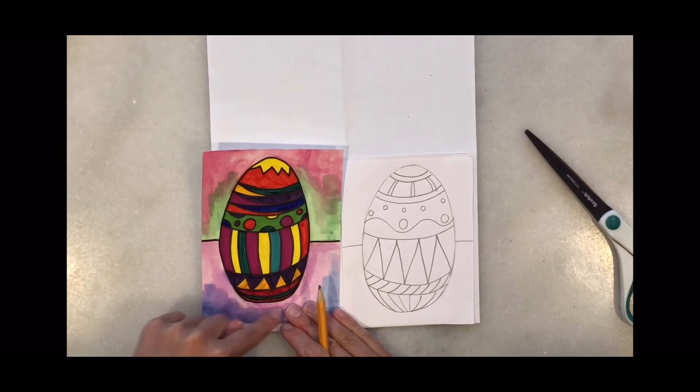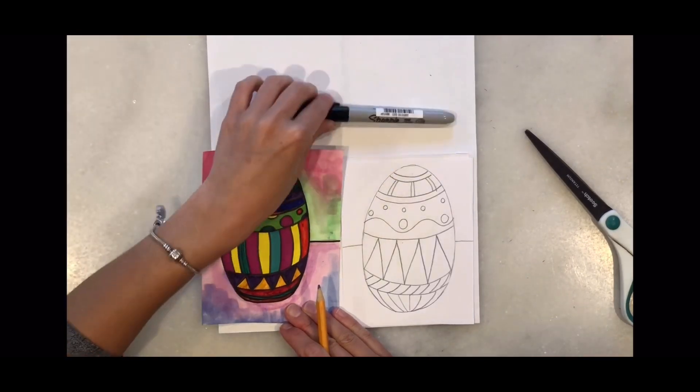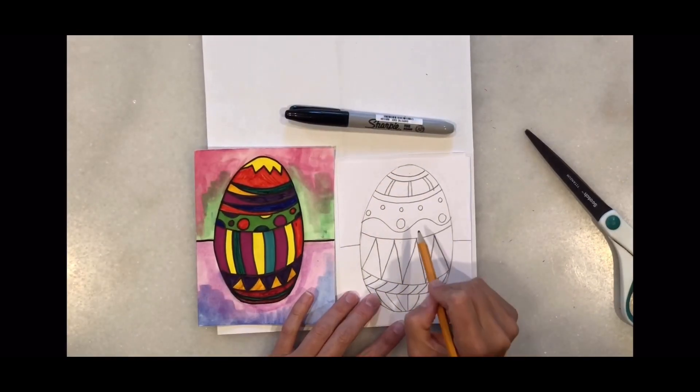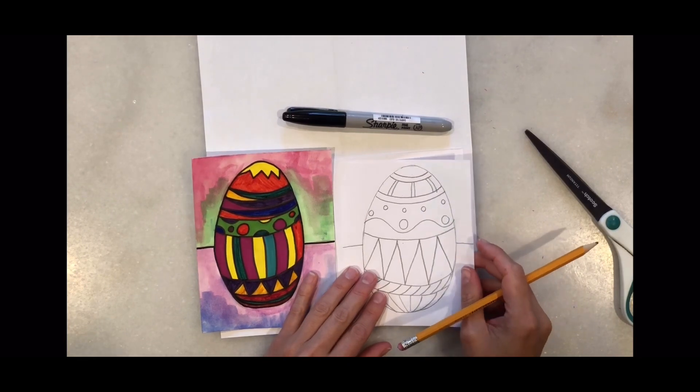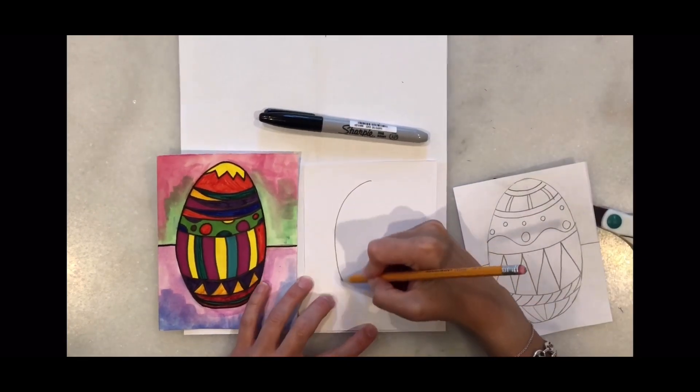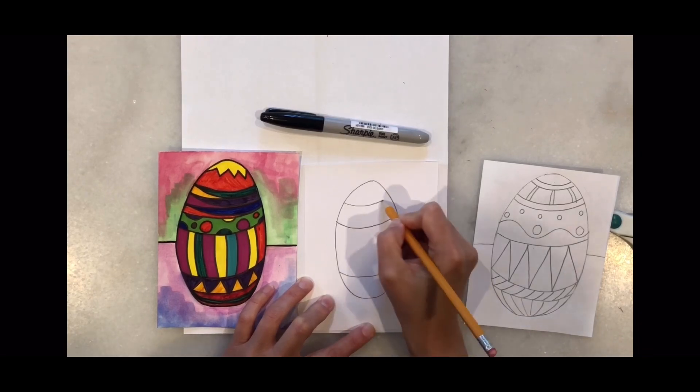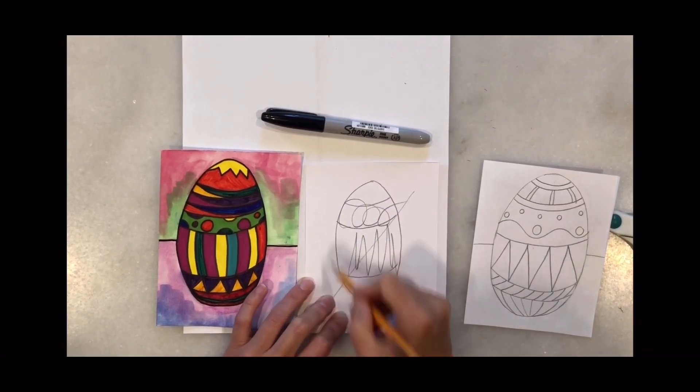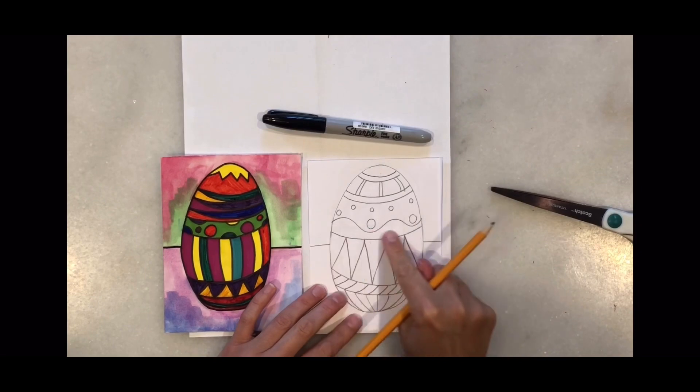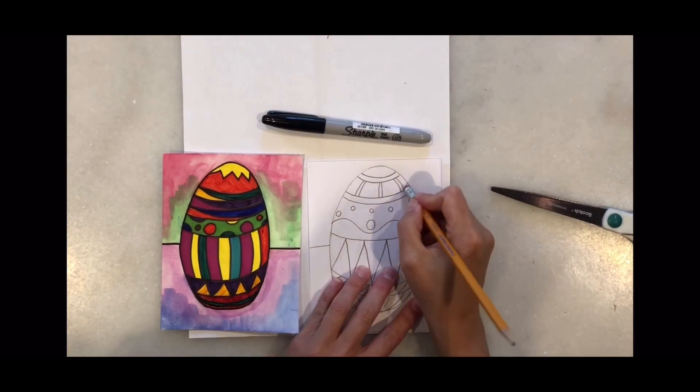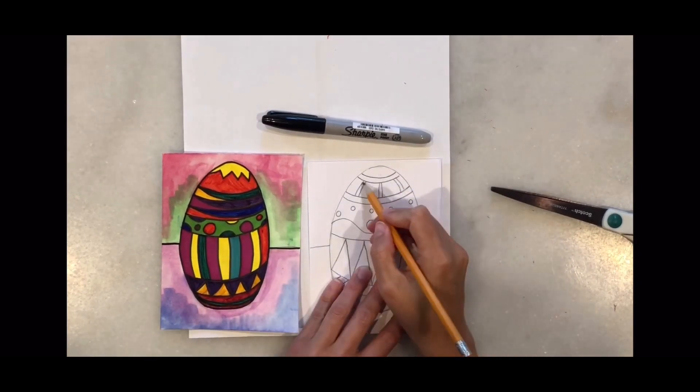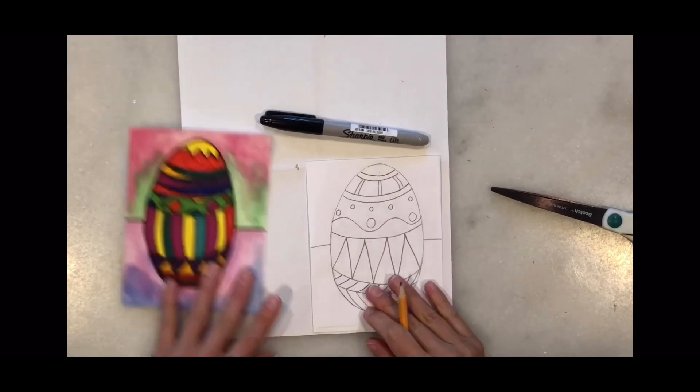In my composition, I use markers for the inside of the egg, watercolors, and a black Sharpie for tracing the lines. Remember when you're drawing your egg, divide it into sections, but do not do scribble-scrabble. Take your time to draw beautiful lines and finish them all the way to the end.